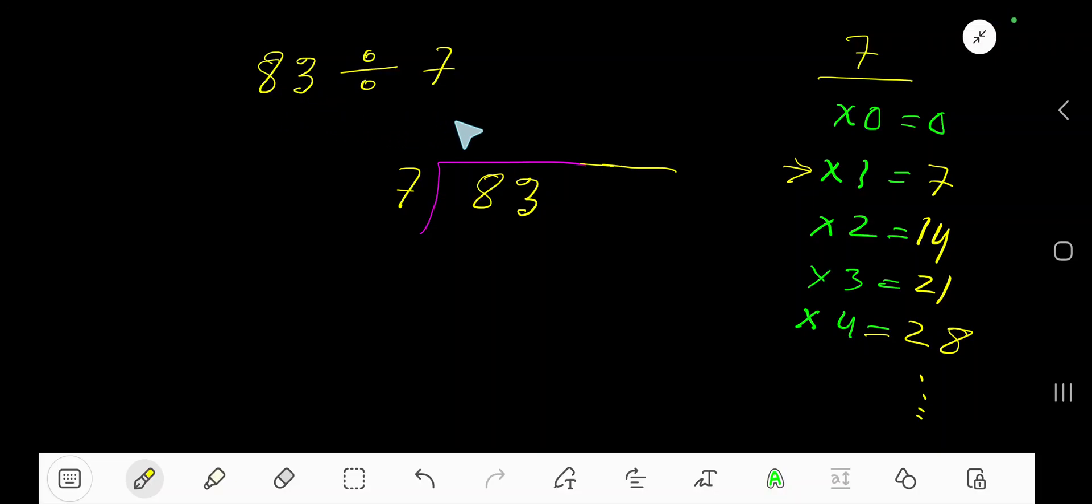83 divided by 7. 7 times 0 is 0, 7 times 1 is 7, 7 times 2 is 14, 7 times 3 is 21, 7 times 4 is 28. This process will continue. To find the multiplication table of 7 easily, just add 7 with the previous step: 0 plus 7 is 7, 7 plus 7 is 14, 14 plus 7 is 21, 21 plus 7 is 28.